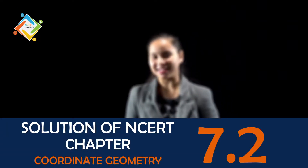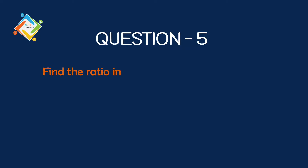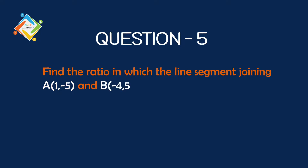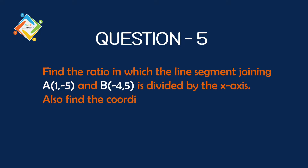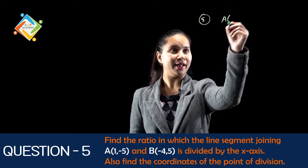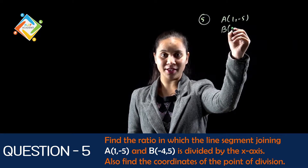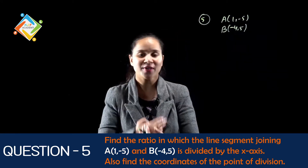Now students, coordinate geometry exercise 7.2 question number 5. The question is: Find the ratio in which the line segment joining A(1, -5) and B(-4, 5) is divided by the x-axis. Also find the coordinate of the point of division. So student, the coordinate of point A is (1, -5) and the coordinate of point B is (-4, 5).